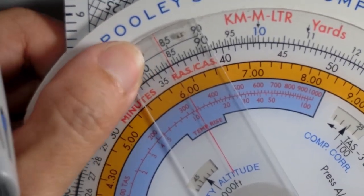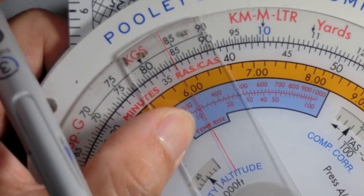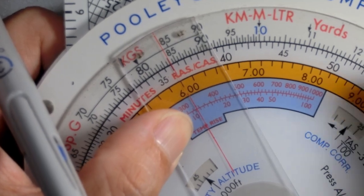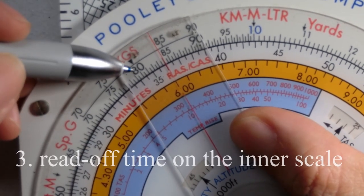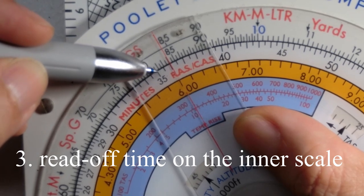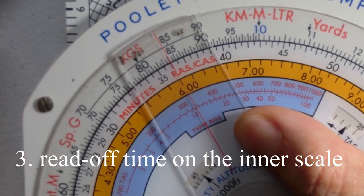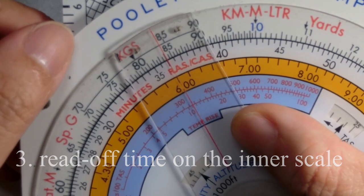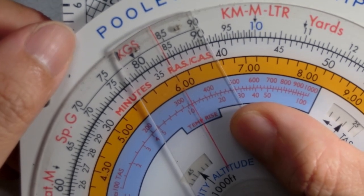And we can see that for a distance of 84 miles we would take 35, 36 minutes. So the time to cover 84 nautical miles is 36 minutes.